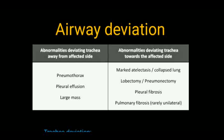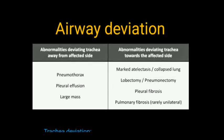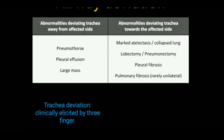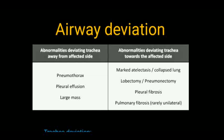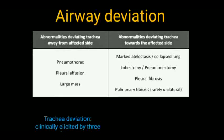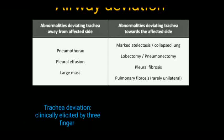Abnormalities deviating the trachea away from the affected side include pneumothorax, pleural effusion, and large masses — these push the trachea away from the pathology. Abnormalities deviating the trachea towards the pathology include marked atelectasis or collapsed lung, lobectomy or pneumonectomy, pleural fibrosis, and pulmonary fibrosis — these pull the trachea towards the pathology.